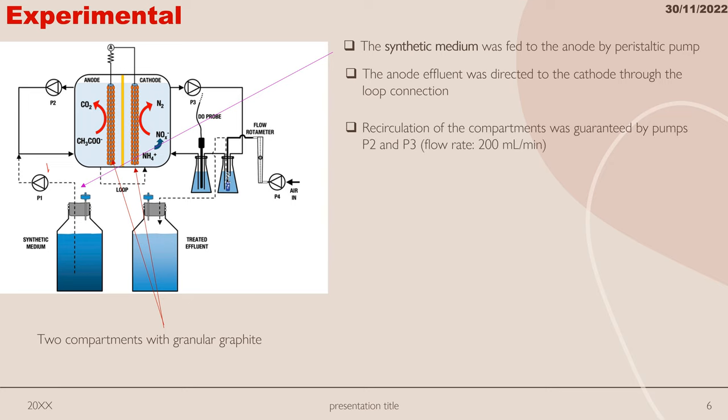Recirculation of compartments was done by P2 and P3 pumps. Finally, graphite rods create electric contact between the granules and outside of the cell.